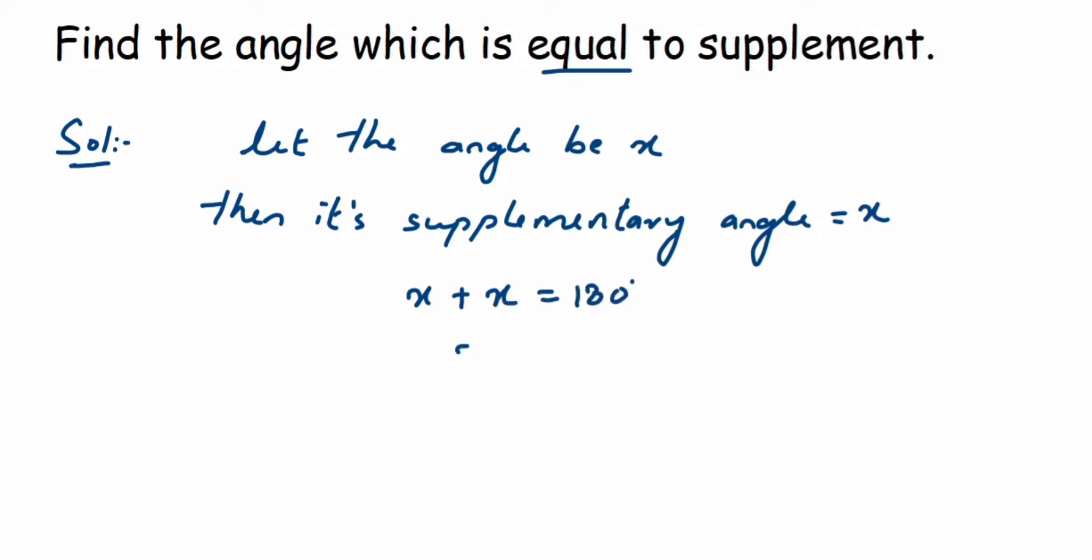Now you're going to transpose this 2 to the other side. So x will be equal to 180 degrees upon 2, because 2 is in multiplication, it comes in division.